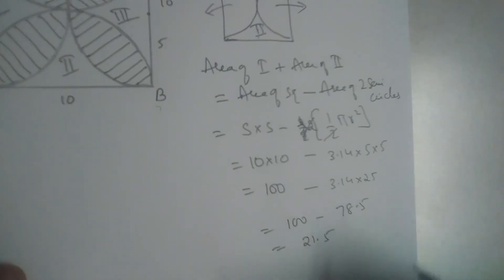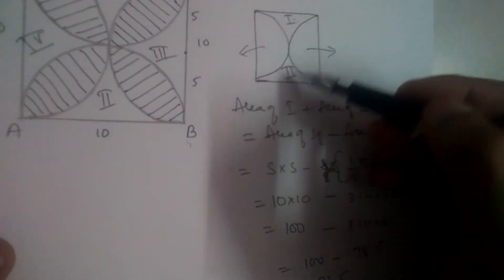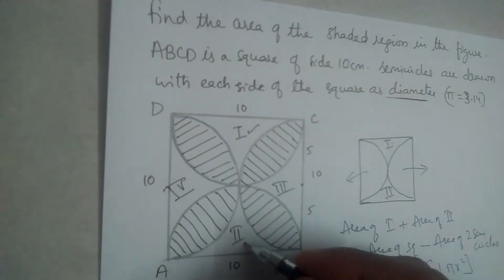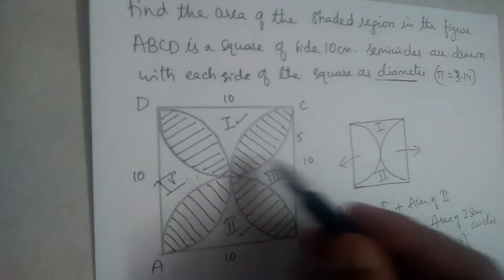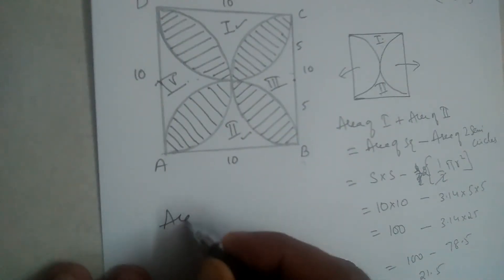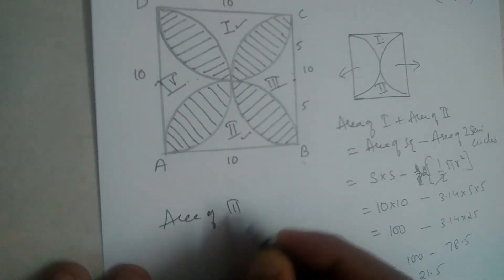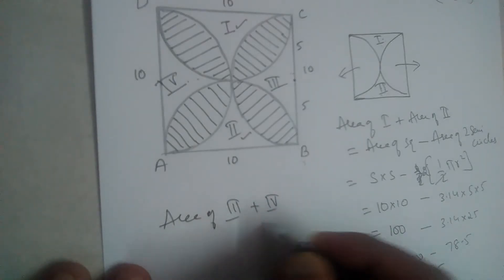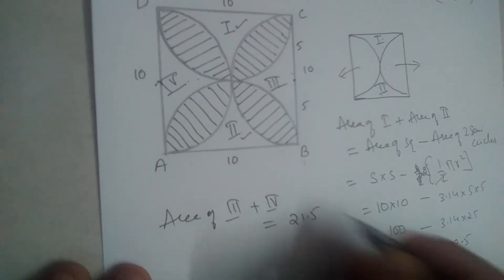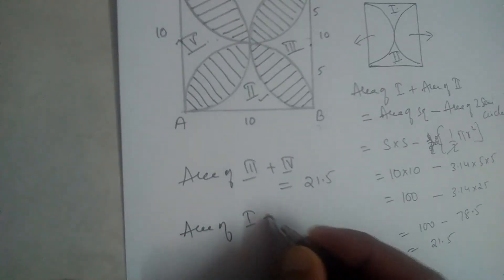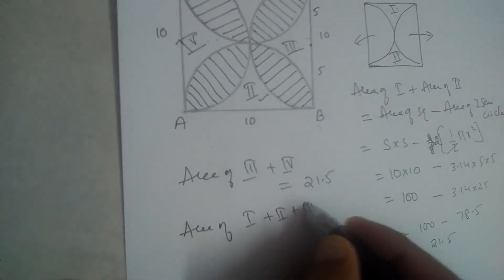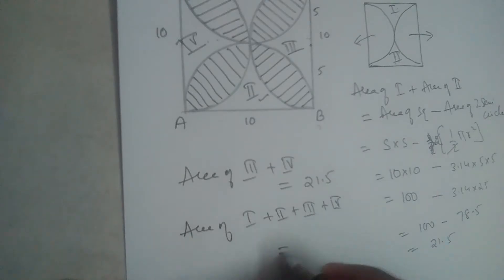So area of 1 and 2 is 21.5. This part and this part total 21.5. By symmetry, these two are also equal, so area of 3 plus 4 will also be 21.5. Therefore, area of 1 plus 2 plus 3 plus 4 equals 43.